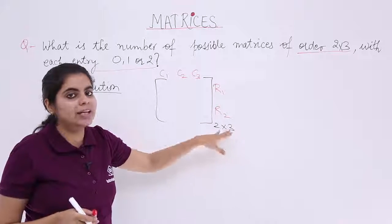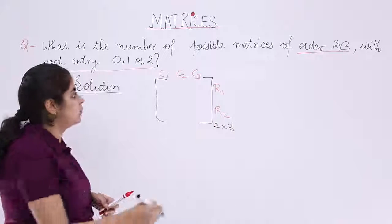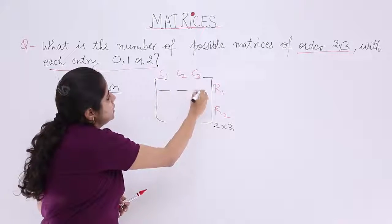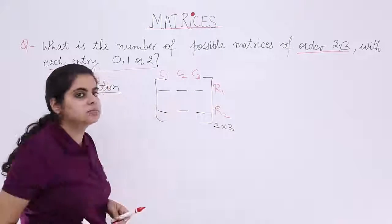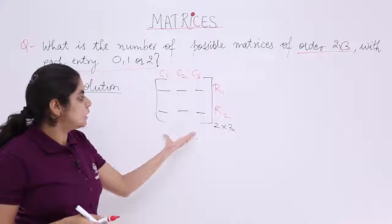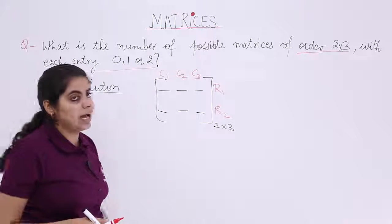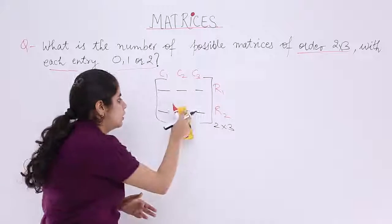Why? Because m into n, the number of rows into columns, gives me the number of elements. Otherwise you can also see 3 elements here and 3 elements below. But the story is not completed here. The story actually has a lot more depth to it.